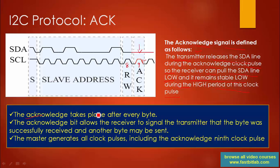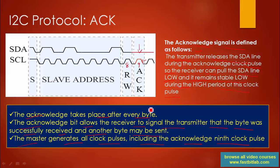The acknowledge takes place after every byte. The acknowledge bit allows the receiver to signal the transmitter that the byte was successfully received and another byte may be sent. The master generates all clock pulses including the acknowledge — that is, the ninth clock pulse. So the transmitter always expects the ACK or NACK at the ninth clock cycle.